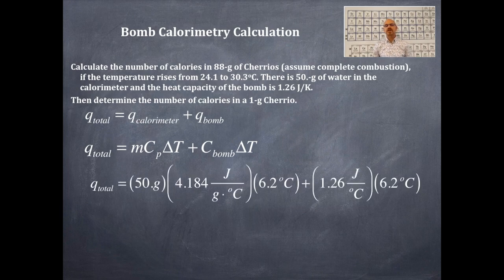The mass of the water is 50 grams. The specific heat of water is 4.184 joules per gram degree Celsius, and the change in temperature is 6.2 degrees Celsius. The heat capacity of the bomb is 1.26 joules per degree Celsius, which is the same as joules per Kelvin, and then the change in temperature is the same. We're going to cancel all the units out here. We're going to have joules, and we're going to get a numeric value here for this.